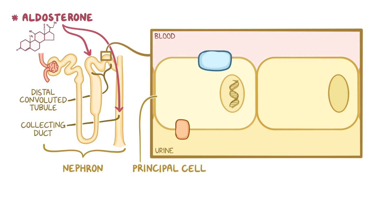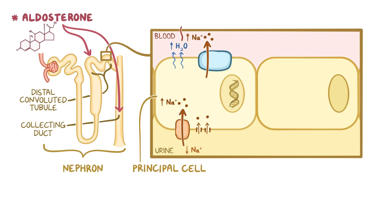Epithelial sodium channels are located on the apical membrane, enabling sodium to exit the filtered urine by entering the principal cells. Sodium-potassium ion pumps, located on the basolateral membrane, drive sodium from the cell into the blood, which allows more sodium to flow from the tubule into the cell down its concentration gradient. Since water often flows with sodium through osmosis, water also moves into the blood, increasing blood volume and therefore blood pressure.